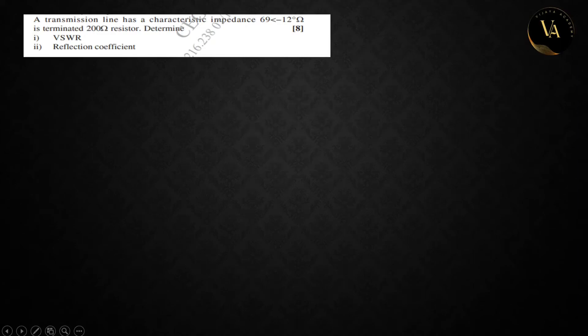Hello everyone. Welcome back to our channel. Today is the next question. What is the question given? A transmission line has characteristic impedance 69 angle minus 12 degree ohm is terminated by 200 ohm resistor. We have to find VSWR and reflection constant.